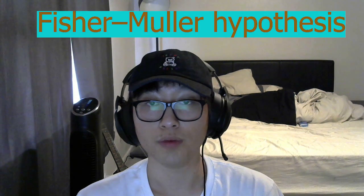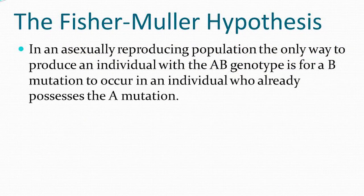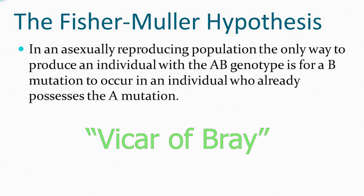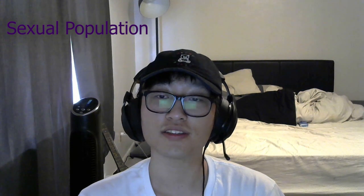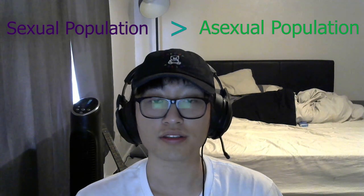Historically speaking, there have been four classes of theories. The first one is called the Fisher-Muller hypothesis — the ability of sex to fix multiple novel advantageous mutants. This theory also refers to the vehicle of variation hypothesis, which attempts to explain why sexual reproduction might have advantages over asexual reproduction. Sexual populations have the ability to outcompete asexual populations because they evolve more rapidly in response to environmental changes.